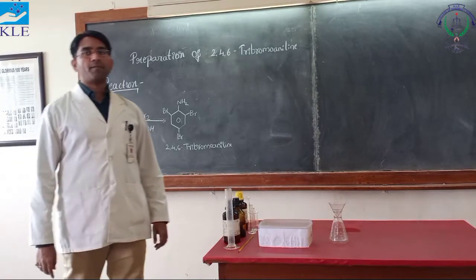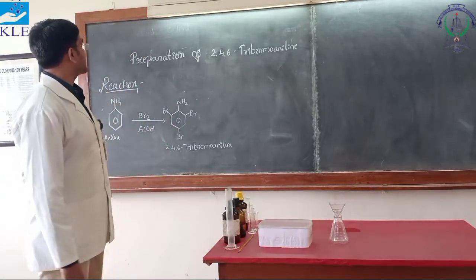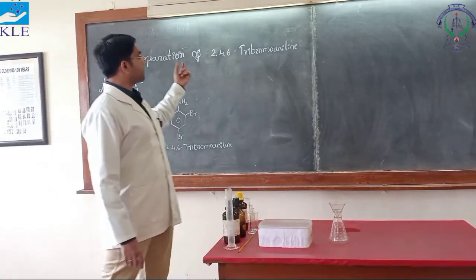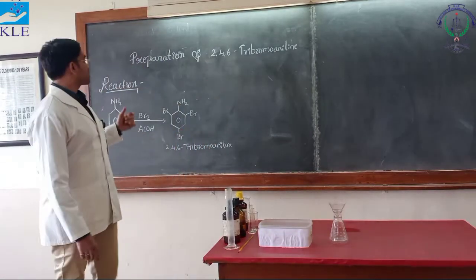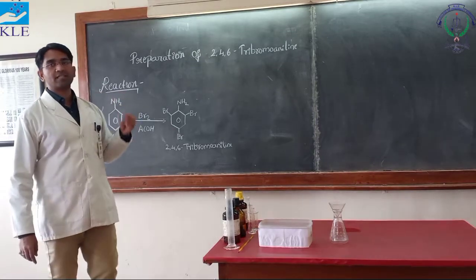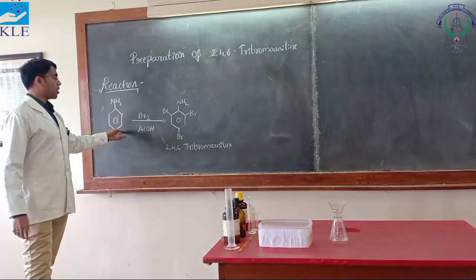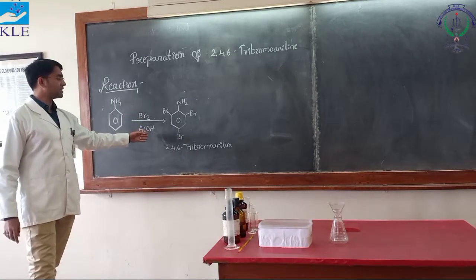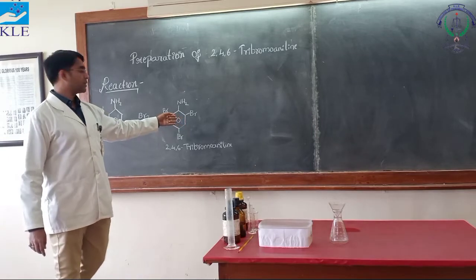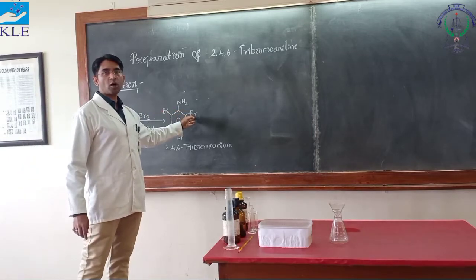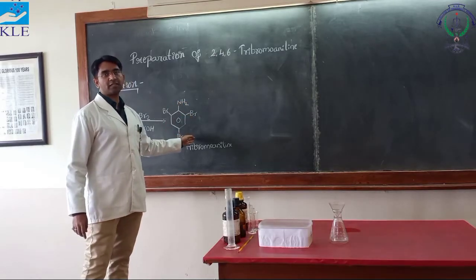Today, myself along with my students, I will be trying to give you the demonstration of preparation of 2,4,6-tribromoaniline. This preparation involves a simple principle: aniline on treatment with bromine and glacial acetic acid undergoes a substitution reaction where two bromines get substituted at the ortho position of the aniline moiety and one gets substituted at the para position.